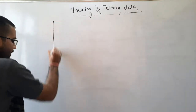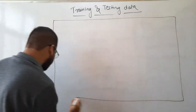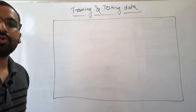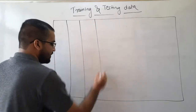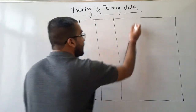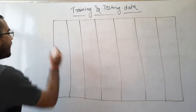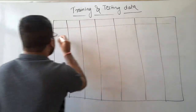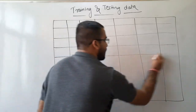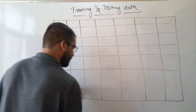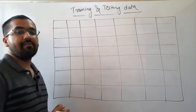Let's consider we have a very big dataset like this. This is our data, and there are many attributes — many variables — such as attribute one, two, three, four, five, six, and seven. This is our whole data, and there would definitely be many samples, or tuples, present in this way.